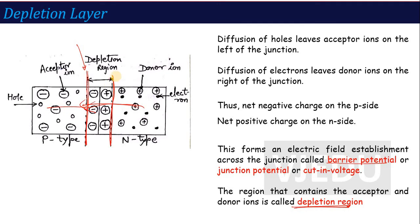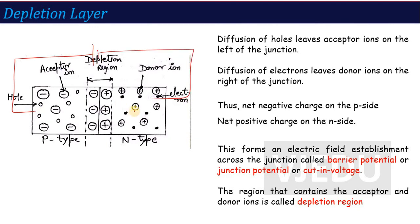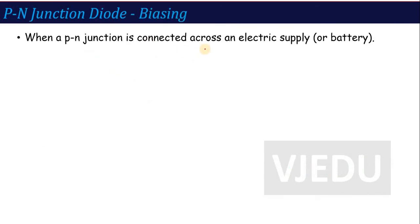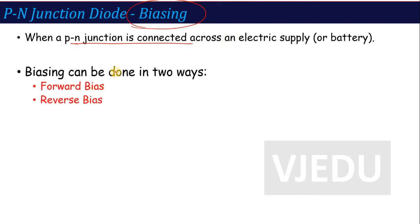The second important question is: what effect comes on your depletion layer? The depletion layer will be impacted when I connect this p-n junction diode to a battery source. When we connect a p-n junction diode with a battery, this particular process is called biasing. We can connect the battery in two categories — two types of biasing: forward bias and reverse bias.